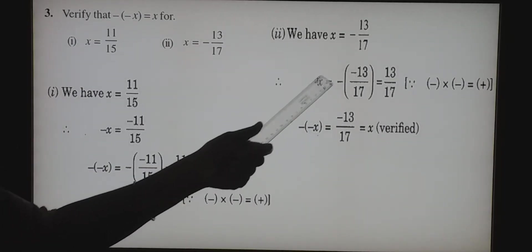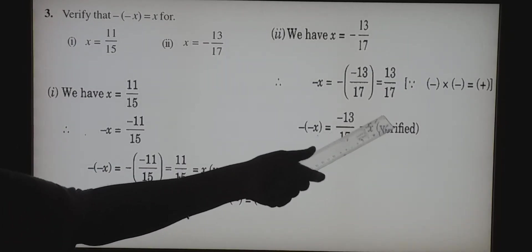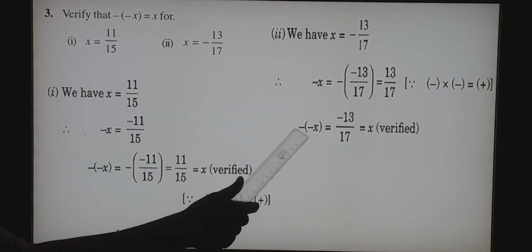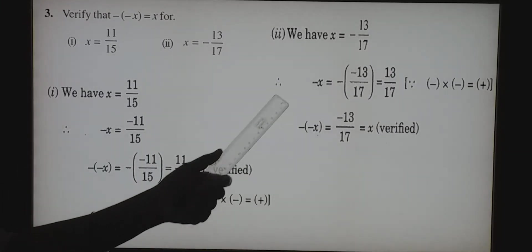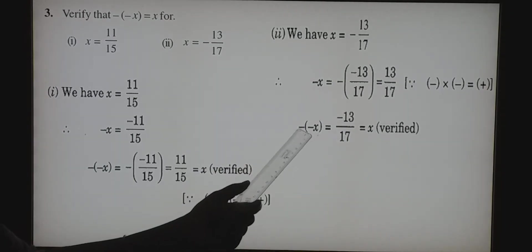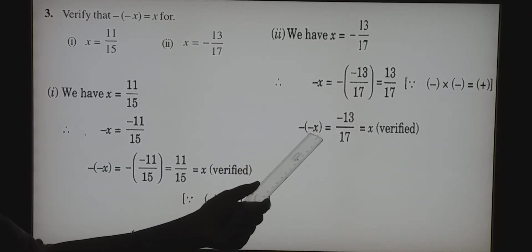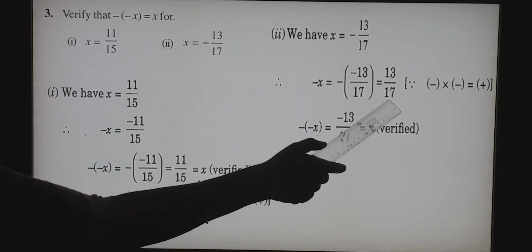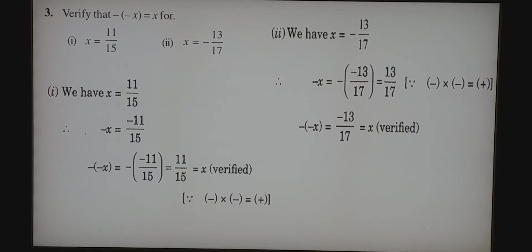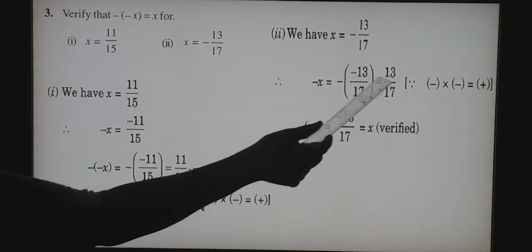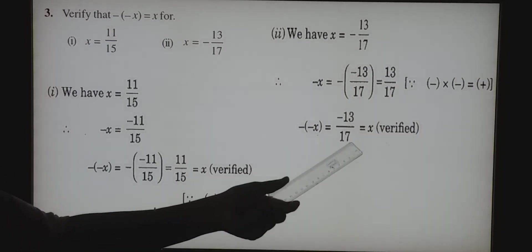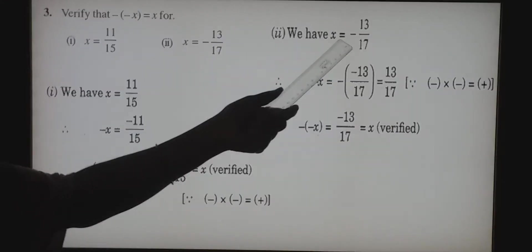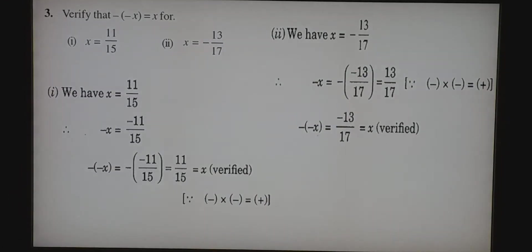Now minus X value is 13 by 17. Coming to the question: minus of minus X. Minus X value is 13 by 17, so minus of 13 by 17 gives minus 13 by 17. We are receiving the exact given X value, so again it is verified.